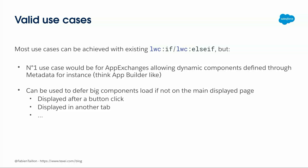There are still some valid use cases. For most partner work, LWC if/else and having components in the markup will do the job 90% of the time. But there are still some use cases where Dynamic LWC is needed. The number one is AppExchange — if you're building an AppExchange with an App Builder-like experience where customers set up which component goes inside, you can't know what they'll put there. And there are other use cases, like optimizing performance by not loading a big component that isn't visible on first page load.